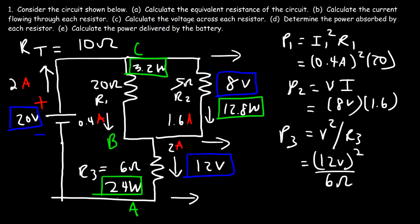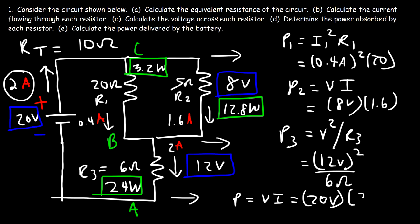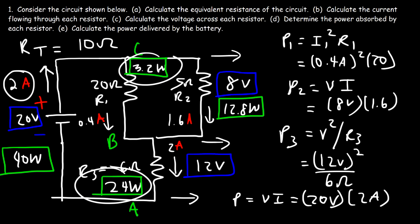The power delivered by the battery equals voltage times current: 20 × 2 = 40 watts. Adding the absorbed powers — 3.2 plus 12.8 plus 24 — gives 40 watts total, which is in harmony with the law of conservation of energy. The power delivered by the battery equals the total power absorbed by all resistors, which confirms our answer is correct.